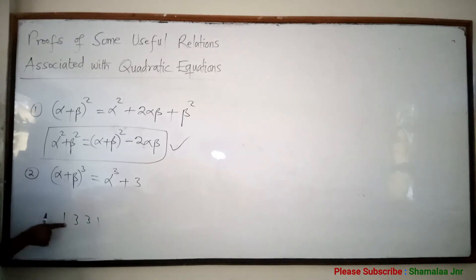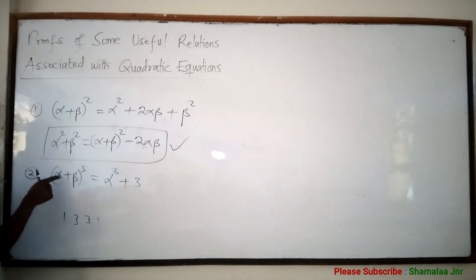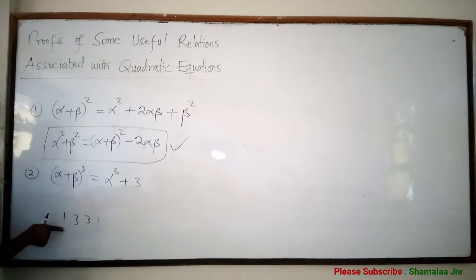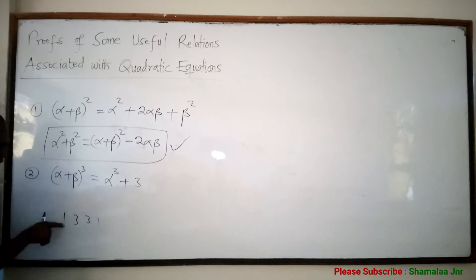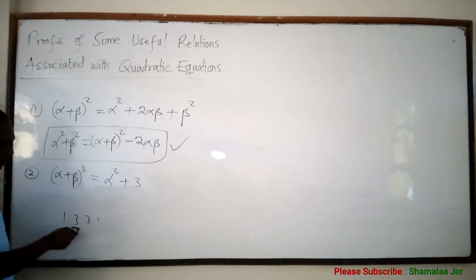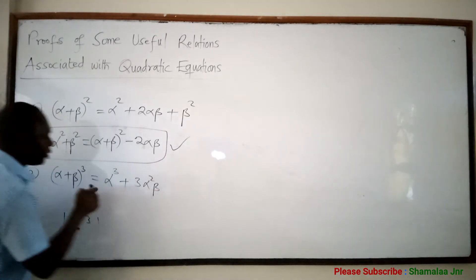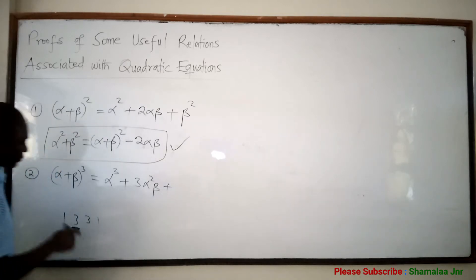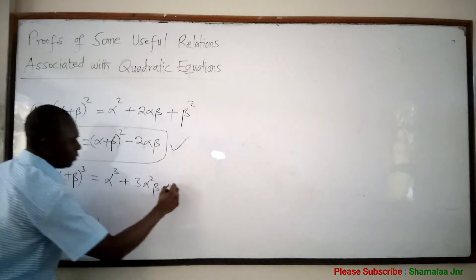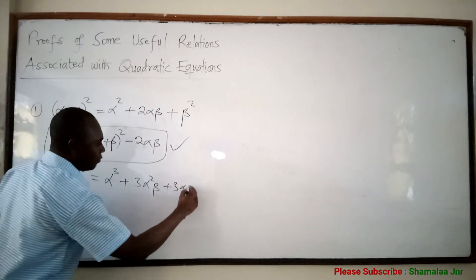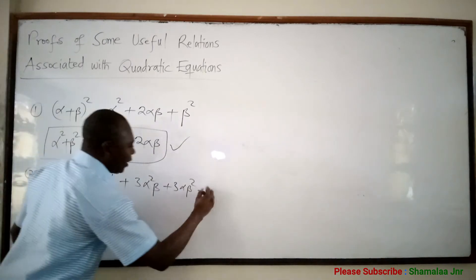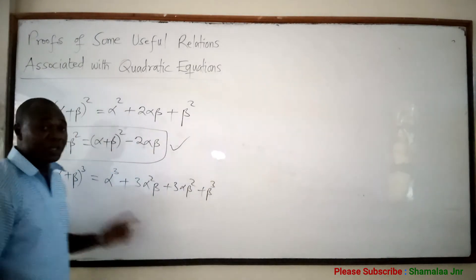The coefficient is 3, and the power of alpha reduces to 2 while the power of beta increases from 0 to 1. The next term has coefficient 3, so 3 alpha beta squared. The last term has coefficient 1, so plus beta cubed. Those of you who have not watched the Pascal's triangle video are advised to go and watch it so that you understand this expansion.